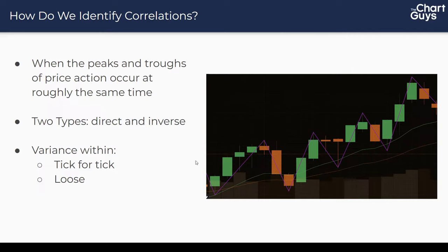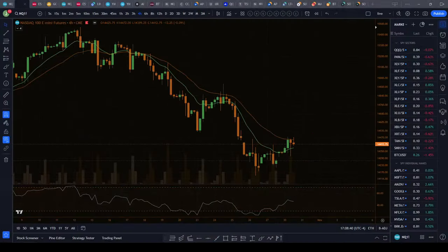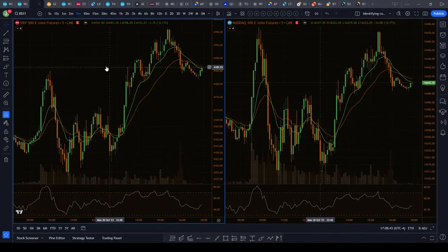How do we identify correlations? It's all about the peaks and troughs and determining if these are happening at roughly the same time. You've got direct correlations — things moving roughly together in the same direction — and inverse correlations, where when one name goes up the other goes down. Within that there's variance: a tick-for-tick correlation where every peak and trough is at the same minute, and a looser correlation where the general sentiment moves in the same direction but smaller time frames have leeway to do their own thing.